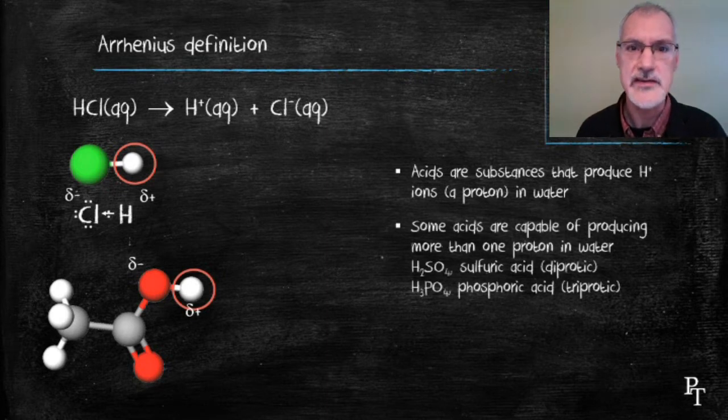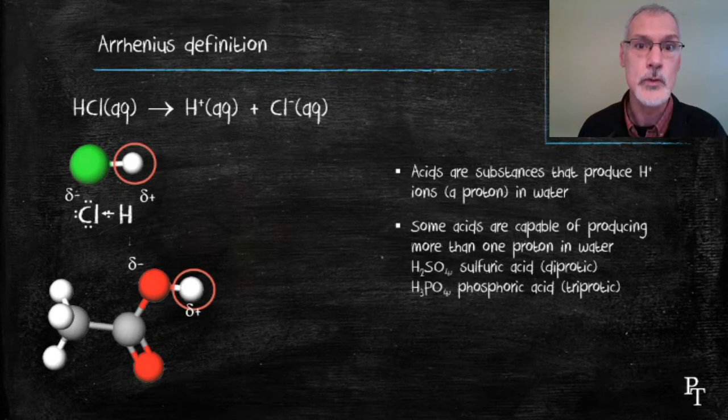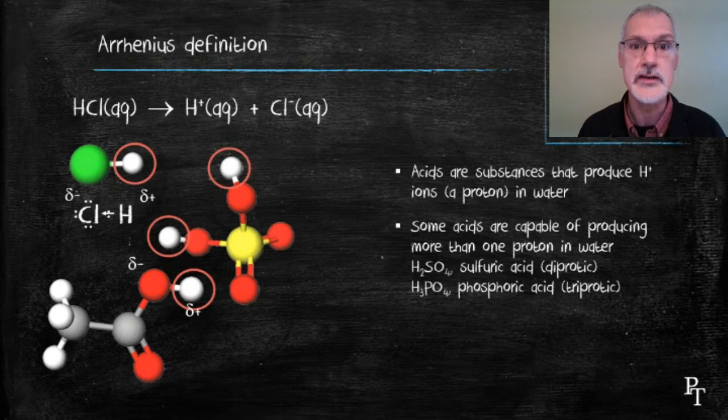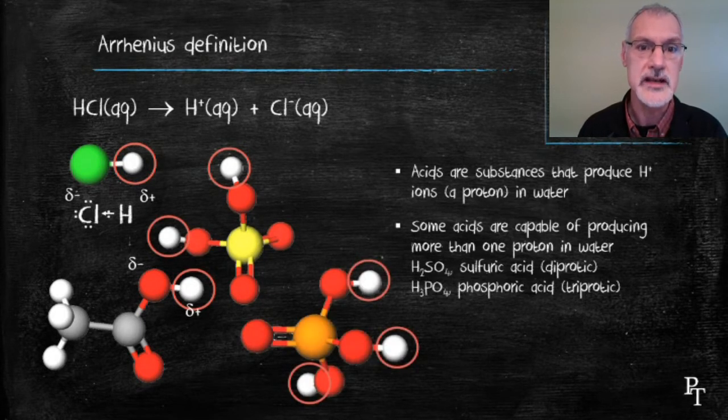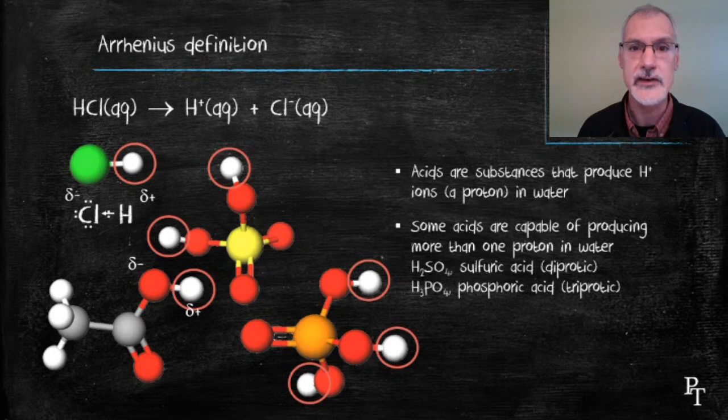Some acids are capable of donating more than one proton. For instance, sulfuric acid can donate two protons. And if we take a look at something like phosphoric acid, it essentially has three protons or three hydrogen ions that could break off it.